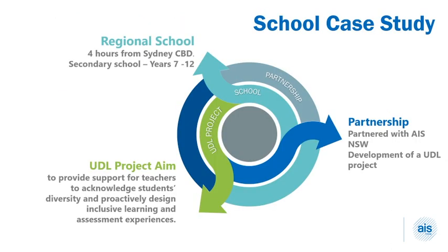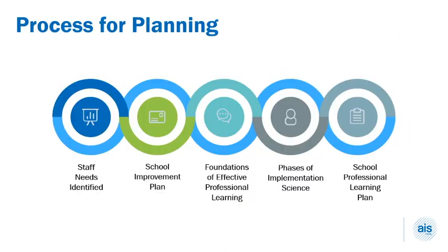The school in this case study was a regional high school outside of Sydney. The school approached AIS to partner with them to develop a professional learning program to engage teachers in the UDL framework. The school wanted to use the framework to proactively design inclusive learning and assessment experiences for students. The school undertook a thorough planning process to design the professional learning. First, the staff identified the needs they had through consultation and surveys. It was identified that staff needed to build capacity to design assessments that were engaging, accessible and met the diverse needs of all their students. This priority then became part of the school's improvement plan for the next three years.